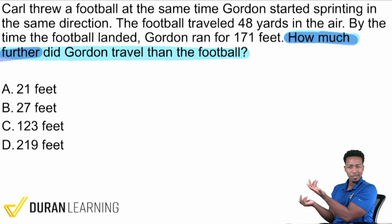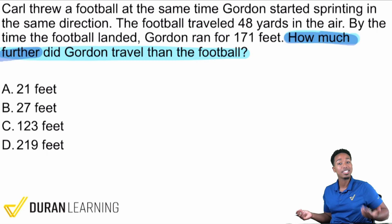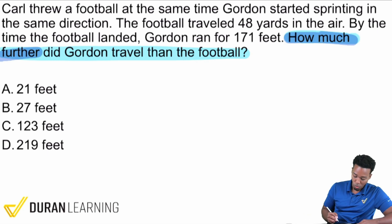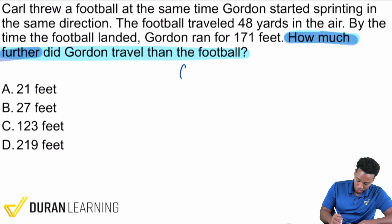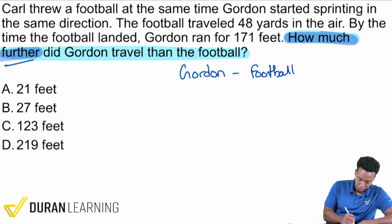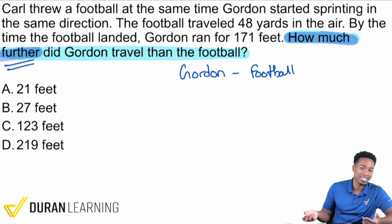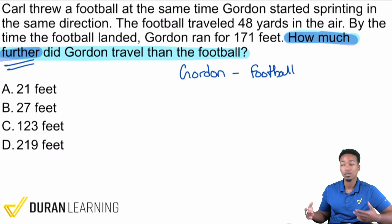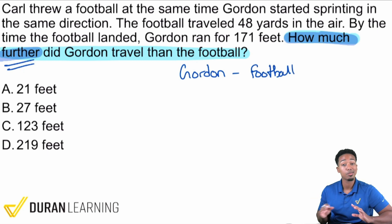With that simple example, we can translate the same thinking. We'll have different numbers, but it's the same idea. How much further did Gordon travel than the football? That tells me our answer will be Gordon minus football. 'How much further' means distance — take the distance that Gordon ran, take the distance the football traveled, subtract them, and you're done.